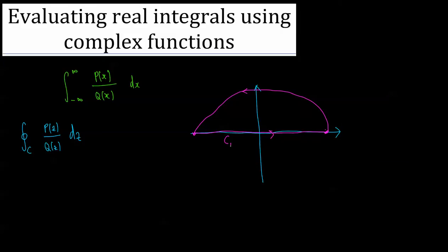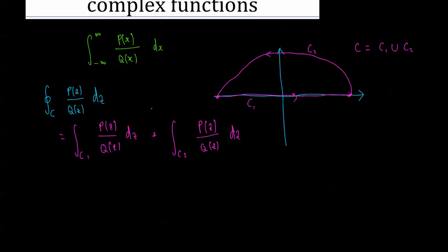So we'll call this c1 and c2, and c is equal to c1 united with path c2. So this integral becomes the integral of c1 p of z on q of z dz. Okay, so all we've done here is path partitioning.